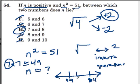51 is really close to 49. So if 7 times 7 is here and 8 times 8 is here, a decimal that's between 7 and 8 has to give me 51.